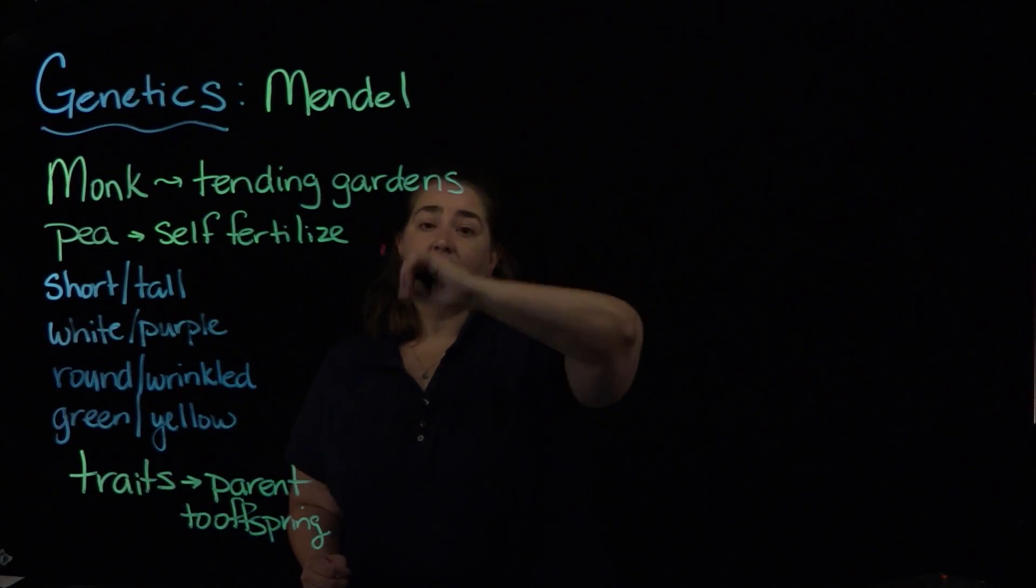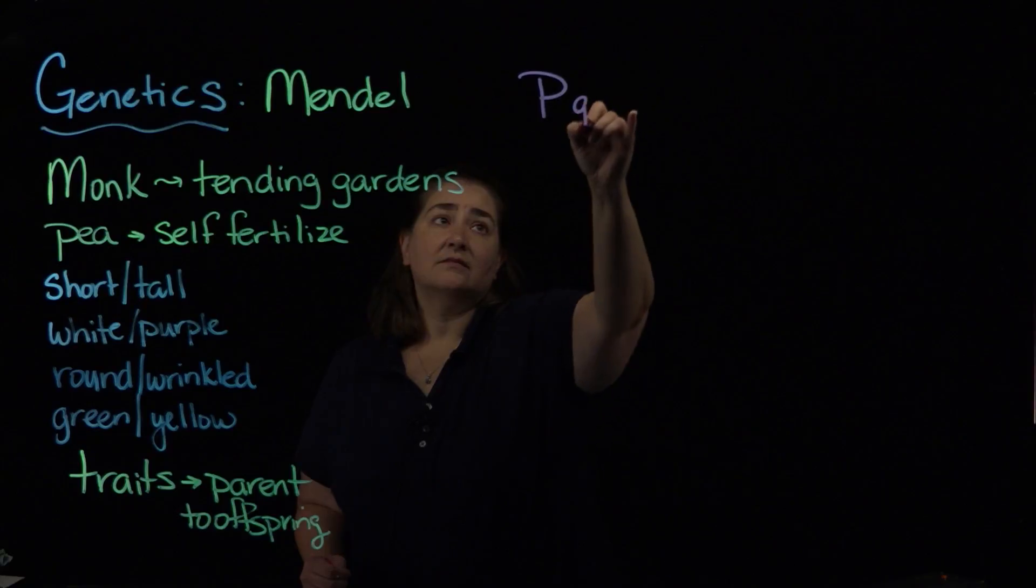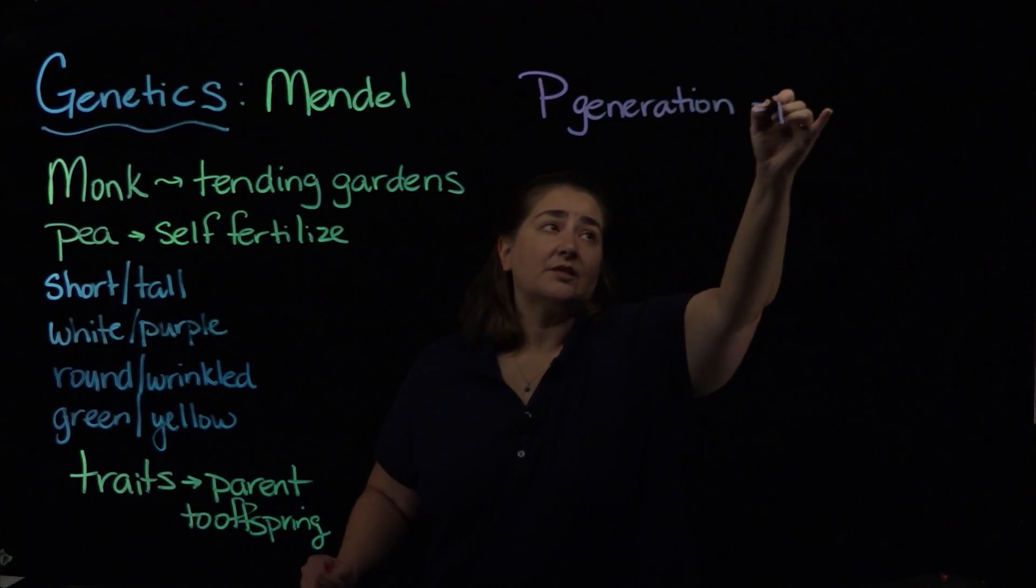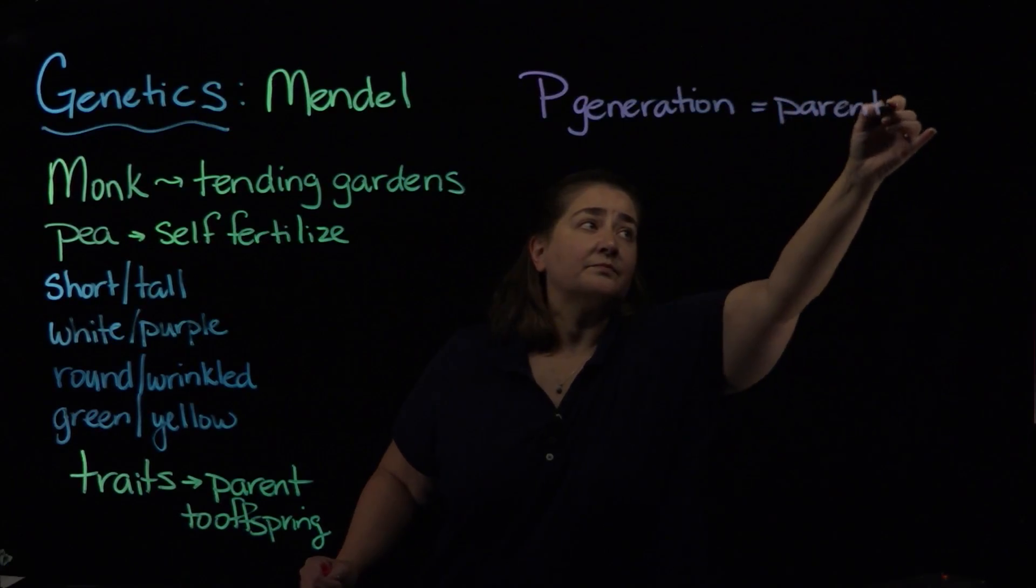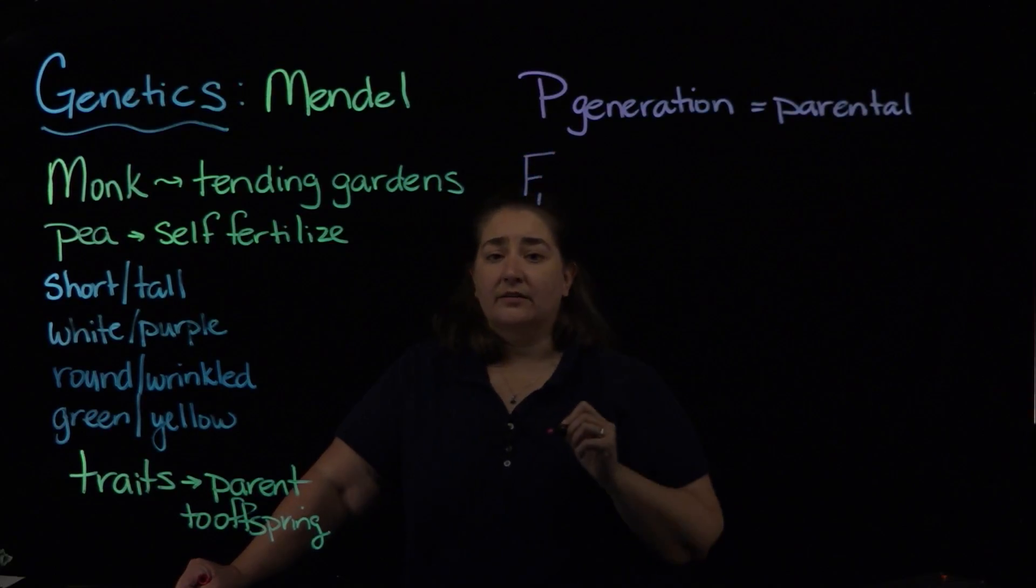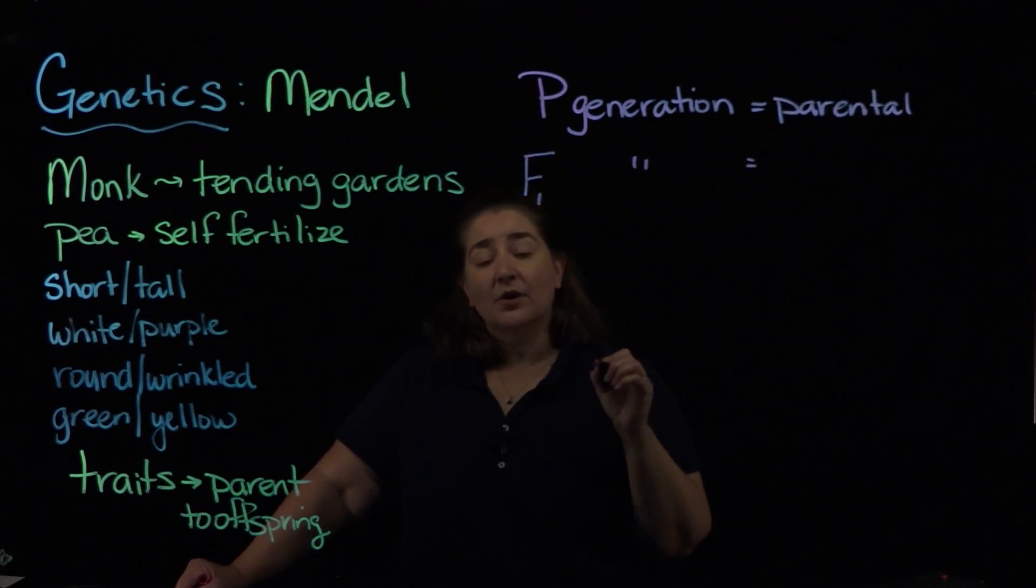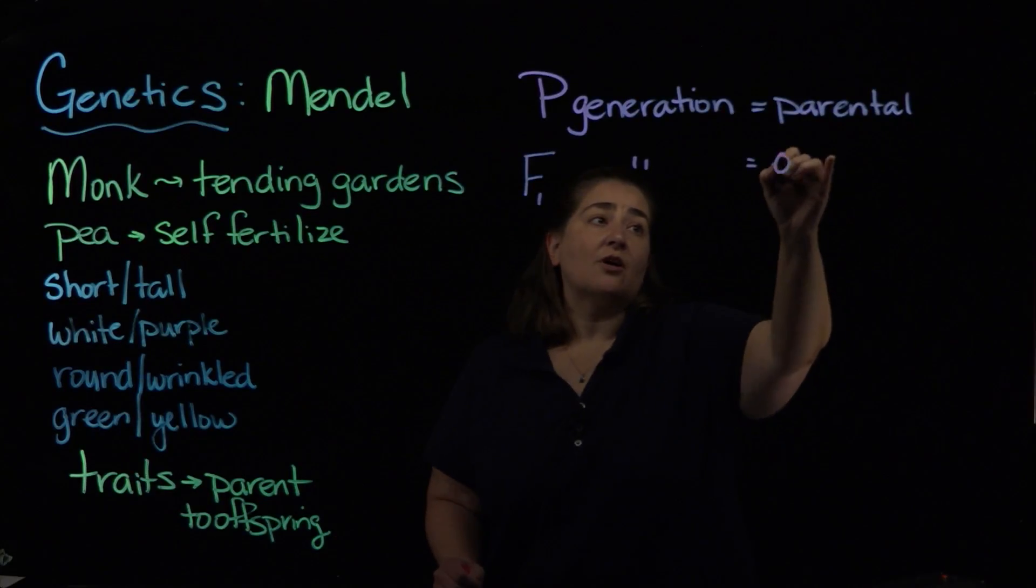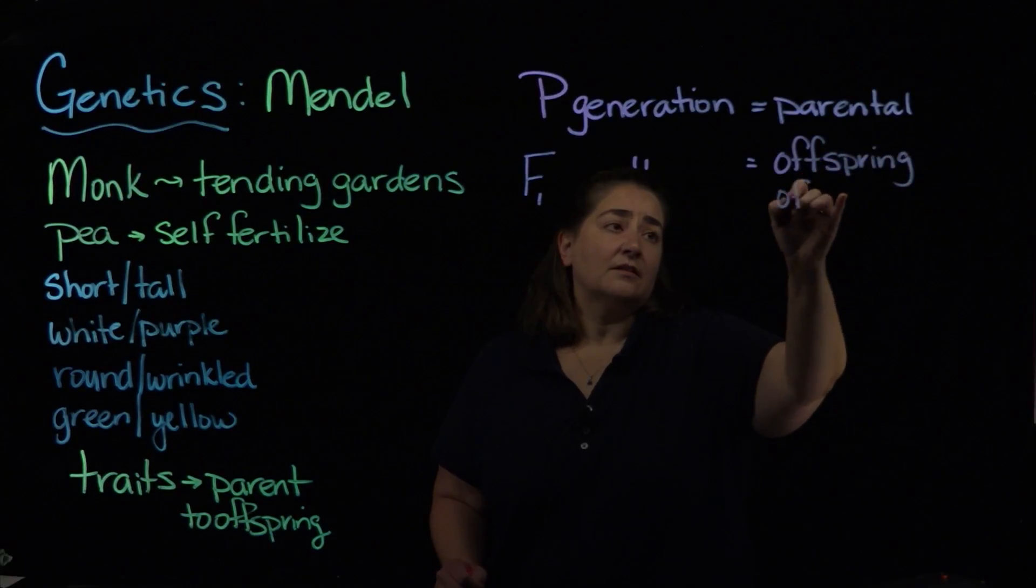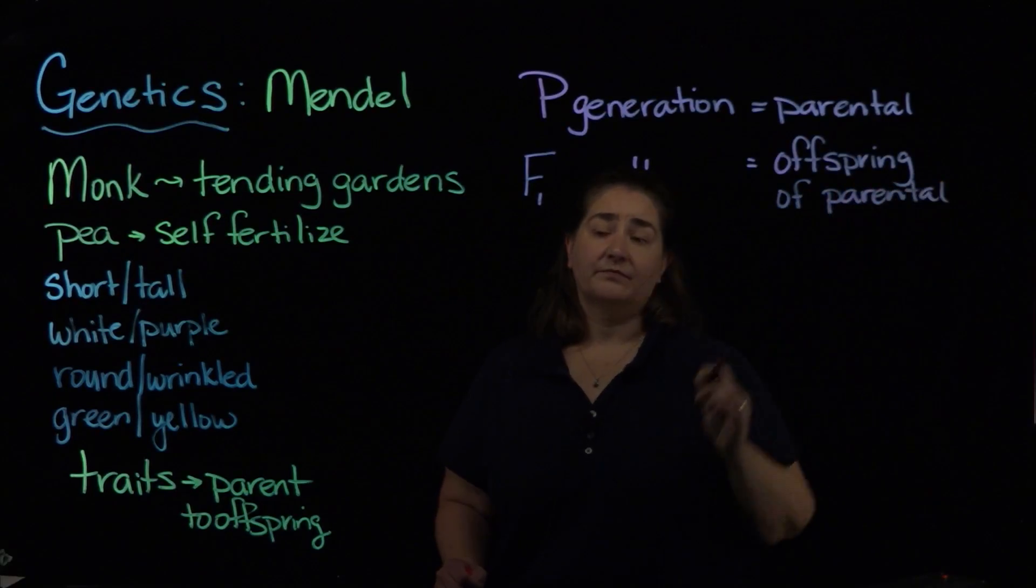And the way we now follow that genetic. The P generation is going to be the parental generation. We've also got associated with that the F1. The F1 generation refers to the offspring of the parental generation.